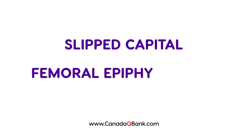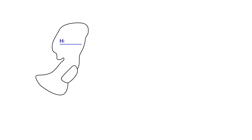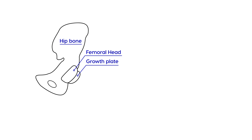Slipped Capital Femoral Epiphysis is the topic. Basically, it involves the femur. I'll draw a diagram here to illustrate what's happening. This is the hip bone, and coming out of it is the femur — this is the femoral head, and right below it is the growth plate, and then you have the actual femur itself, which is the big bone.